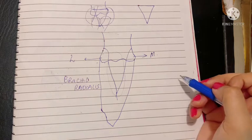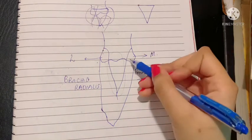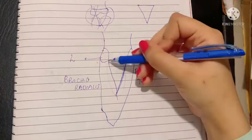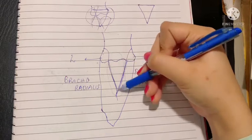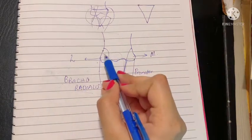What are the boundaries of this fossa? Medially it is made by the lateral border of the pronator teres, while laterally it is made by the medial border of the brachioradialis.